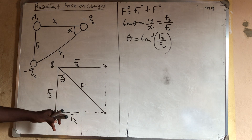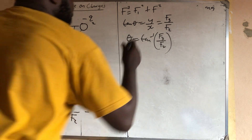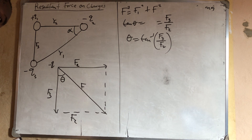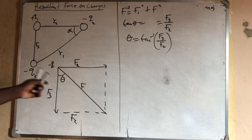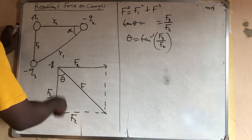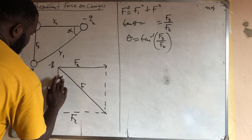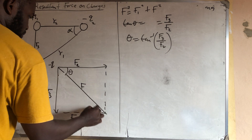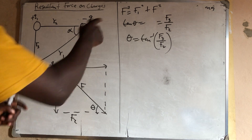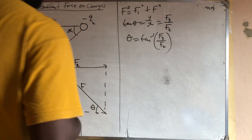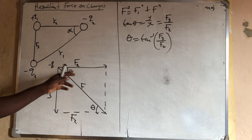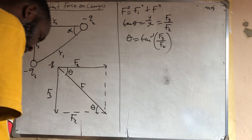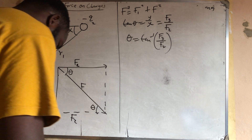This formula — opposite over adjacent — applies when the angle is with the horizontal, making y/x correct. If the angle is with the vertical instead, the formula changes. Let's assume the angle is with the horizontal, so tan(θ) = y/x applies. As simple as that — let's take a question to illustrate.